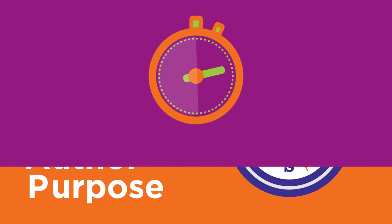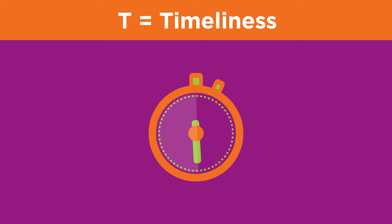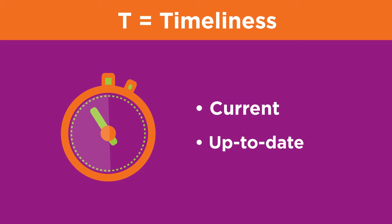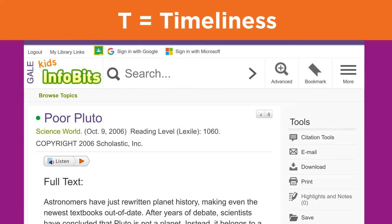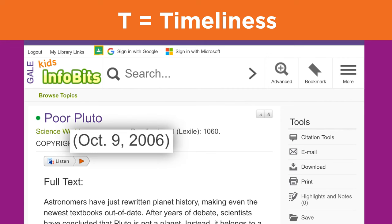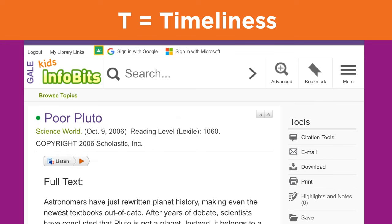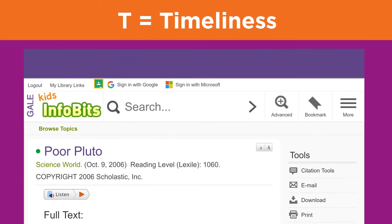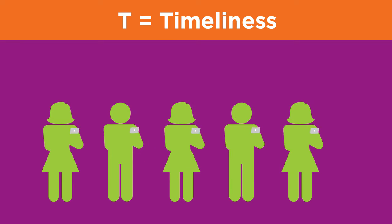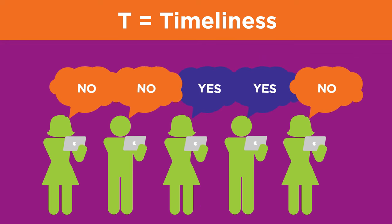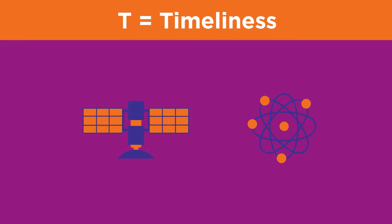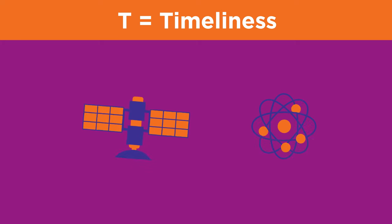The T in TRAP stands for timeliness. Timeliness means information that is current and as up to date as the topic needs. First, find out when this information was created. The date could be when the information was posted, originally written, or copyrighted. If you can't find a date, use your own judgment to determine if the information is current. People do view topics differently and talk about them in different ways at different times. Technology and science provide good examples of how information can change over time.